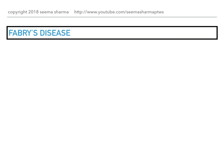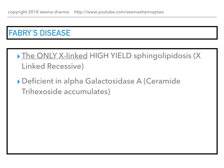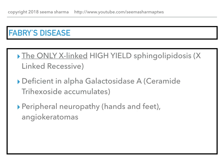Fabry's disease is the only X-linked high-yield sphingolipidosis, and it is X-linked recessive. It is caused by a deficiency in alpha-galactosidase A, which causes an accumulation of ceramide trihexoside. The clinical presentation includes peripheral neuropathy of the hands and feet, as well as angiokeratomas.